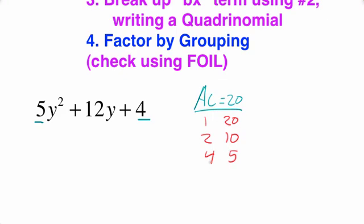These are all positive factors. You could also have negative 1 times negative 20, negative 2 times negative 10, and negative 4 times negative 5, but in this trinomial the 12y is a positive 12y, so we're not going to list any of the negative factors. Now we're going to find which pair adds up to a positive 12.